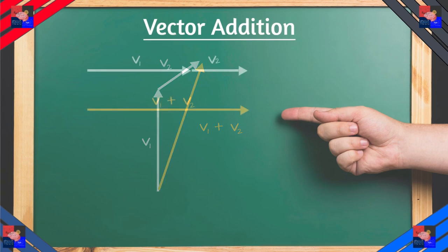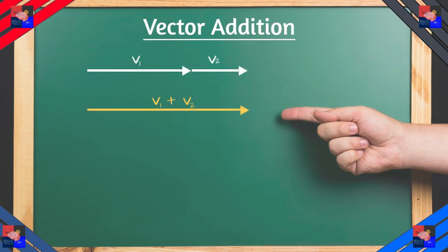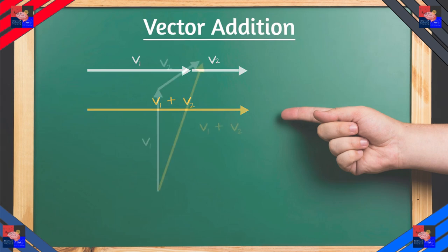And this whole thing is the result. This can be shown in many ways. So if V1 and V2 are pointing in the same direction, they're just a longer vector that is the sum of the two magnitudes. And if it is at an angle, we just create the hypotenuse, like we said.